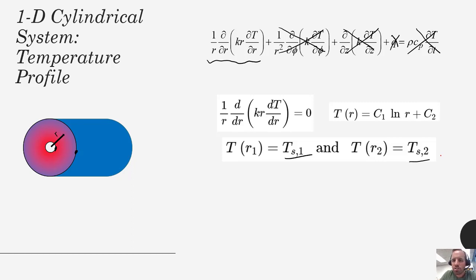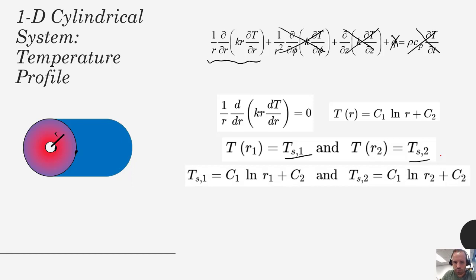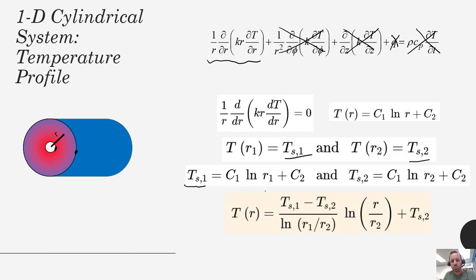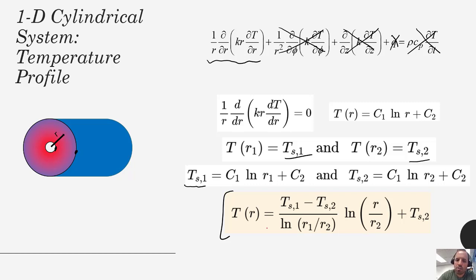Applying those boundary conditions to solve for C1 and C2, we plug in those specific conditions into the generic form of the equation and, after some algebraic rearrangement, we get this temperature profile. If you want more depth, go back to the example problem where we integrated the heat equation for a cylindrical system. Importantly, the temperature profile is no longer linear as it is for the plane wall — here temperature varies as a nonlinear function of radius.